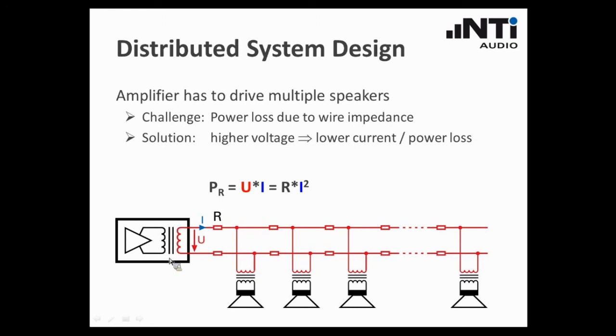By introducing a transformer, which increases the output voltage of the amplifier we have a much higher output voltage here, and introducing again transformers at every loudspeaker, which reduces this voltage back to the operating voltage, we can reduce the current here in this system. That means we are reducing the power loss in the wires. In practice there are some standardized voltages for distributed audio systems. Here in bold characters you will find the most frequently used voltages for distributed audio systems, starting at 70.7 V up to 140 V.